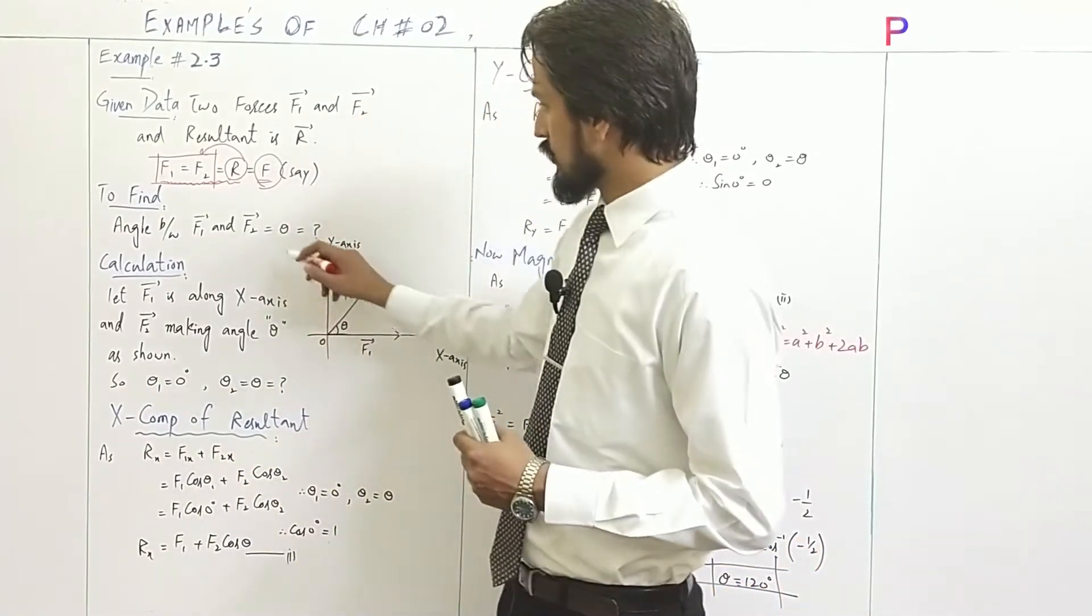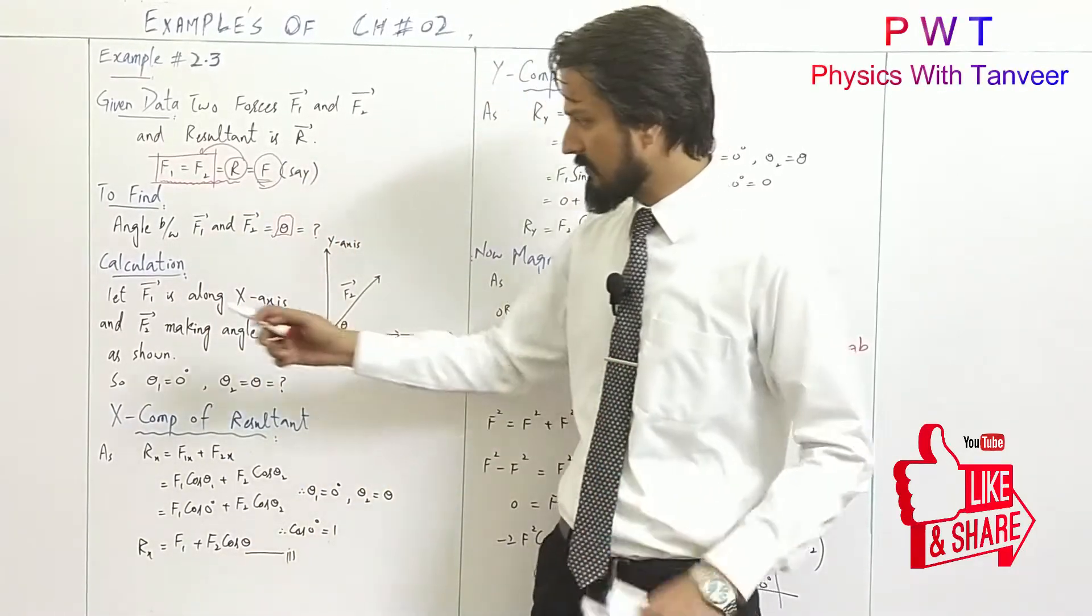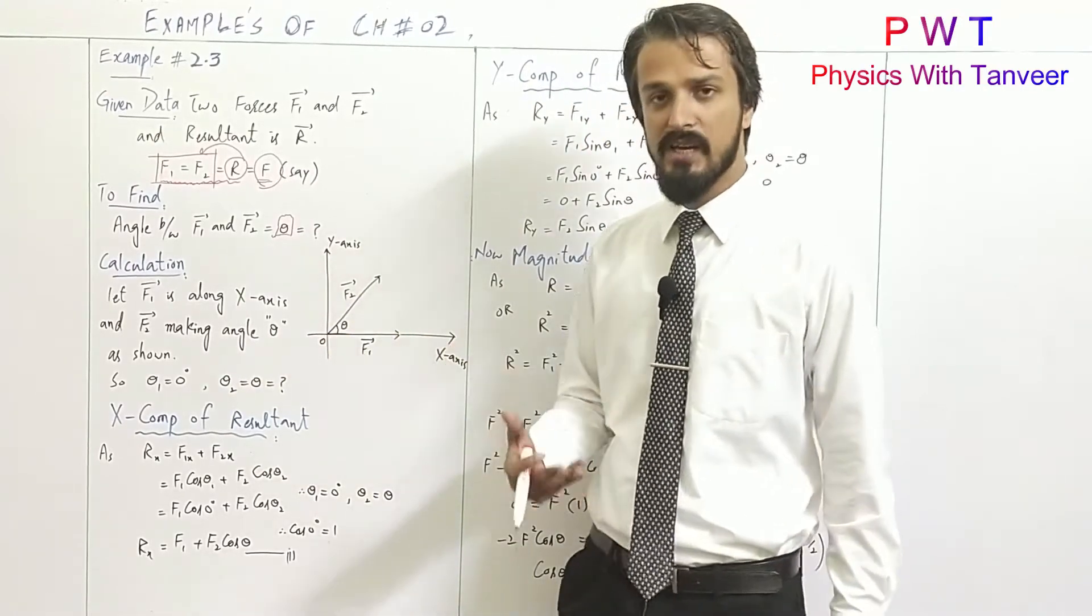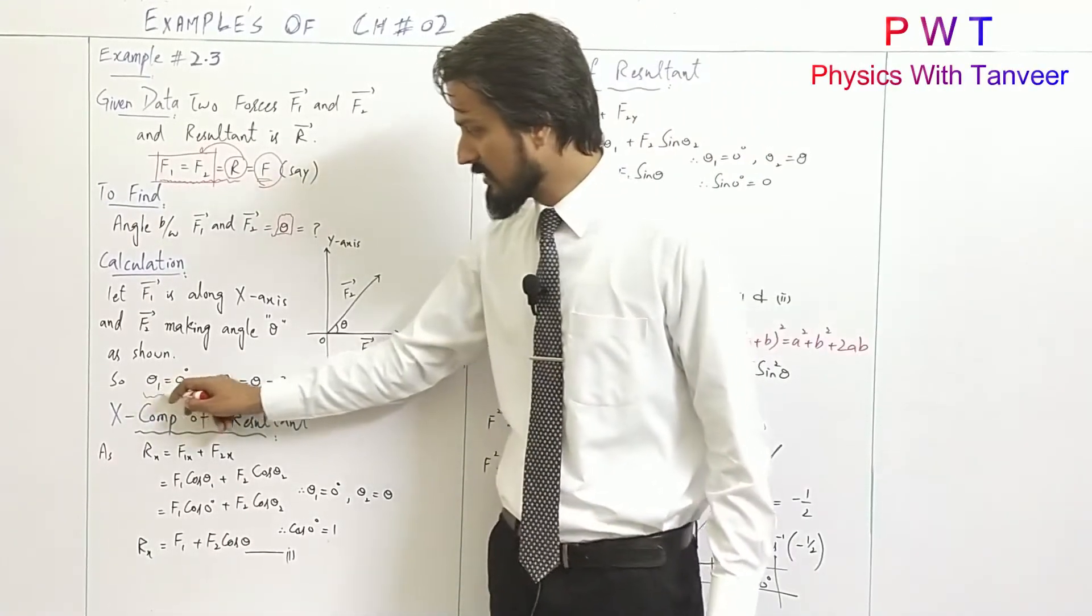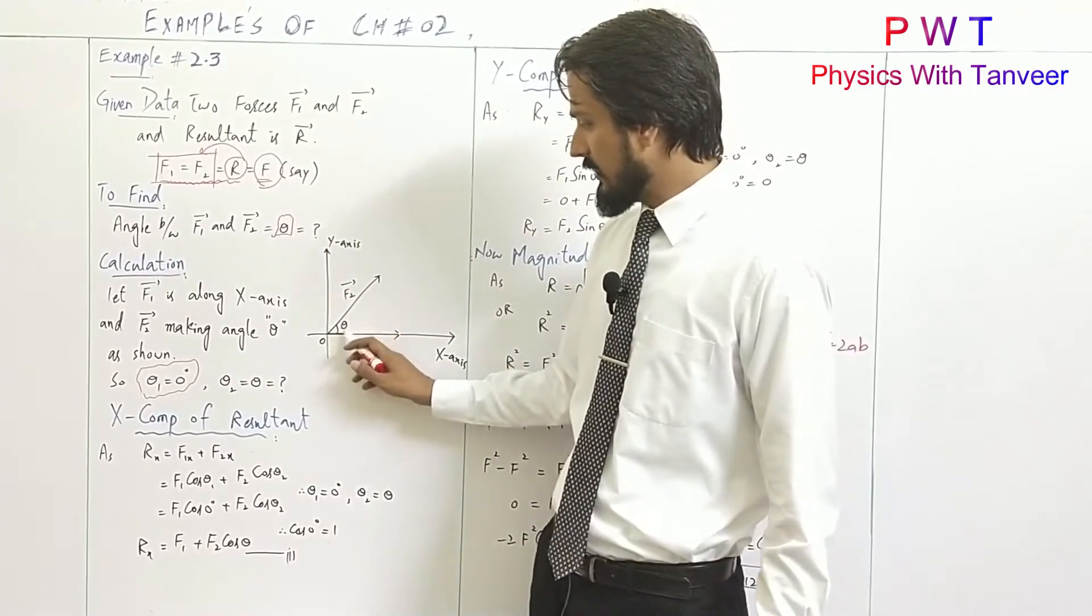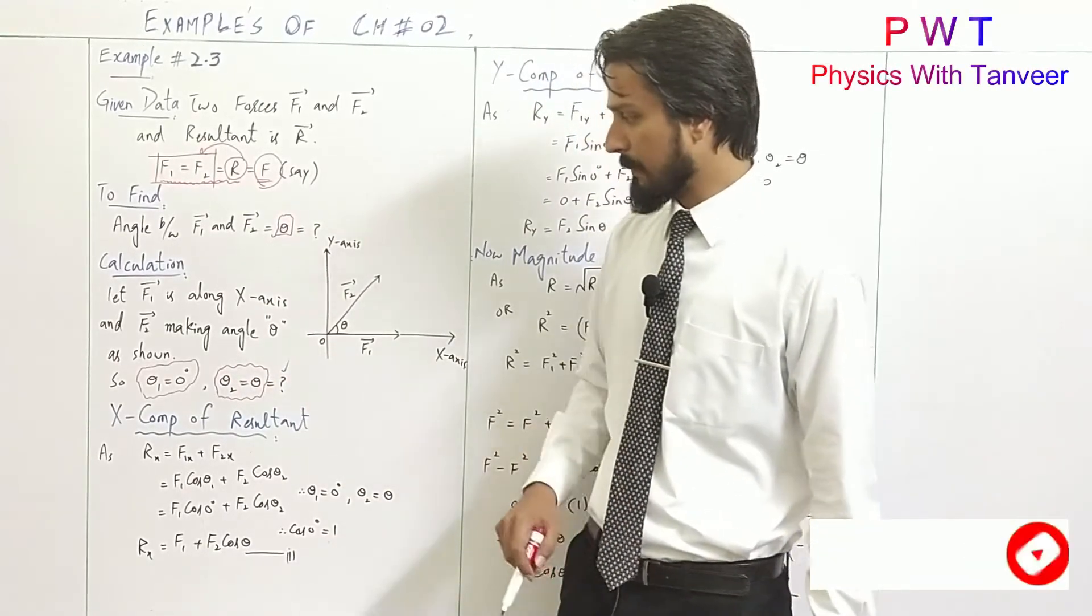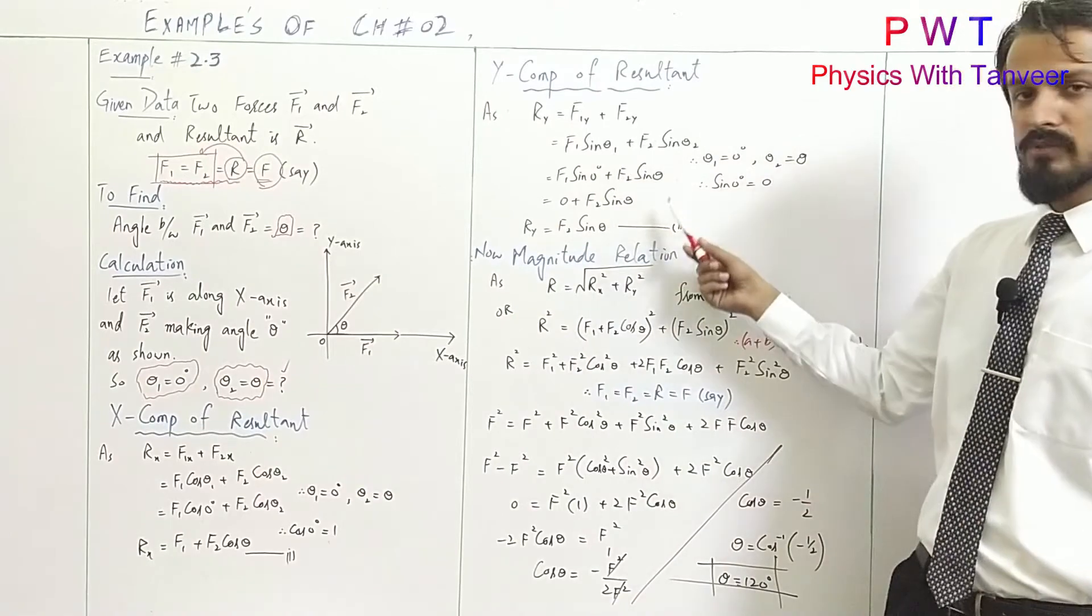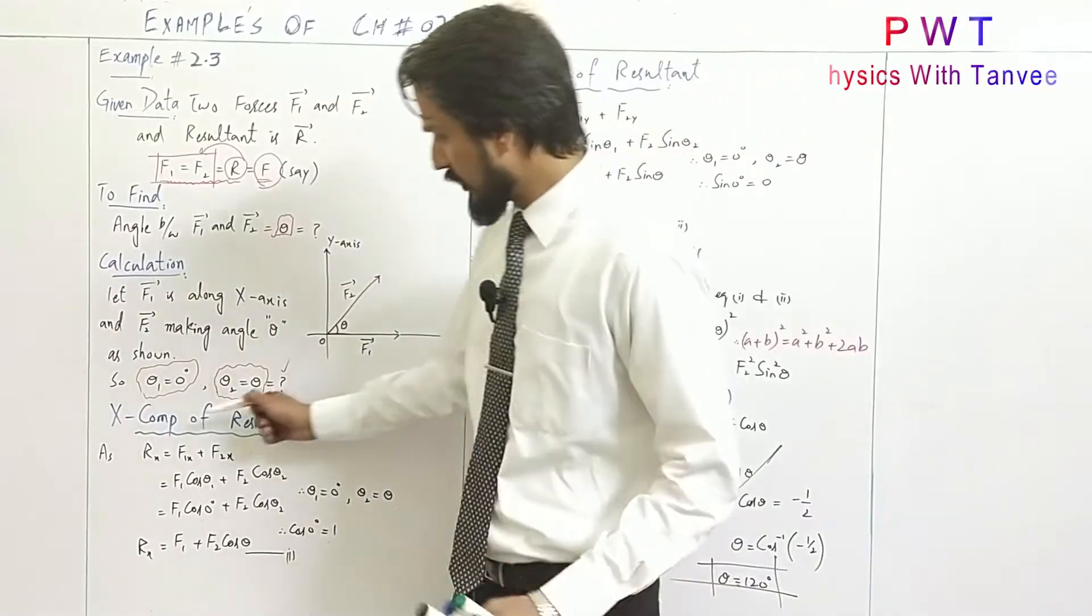Find angle theta between these two forces. Let's suppose F1 is along x-axis and F2 makes angle theta with positive x-axis as shown in the figure. If F1 is along x-axis, then theta one is zero degree. It means theta two is equal to theta.